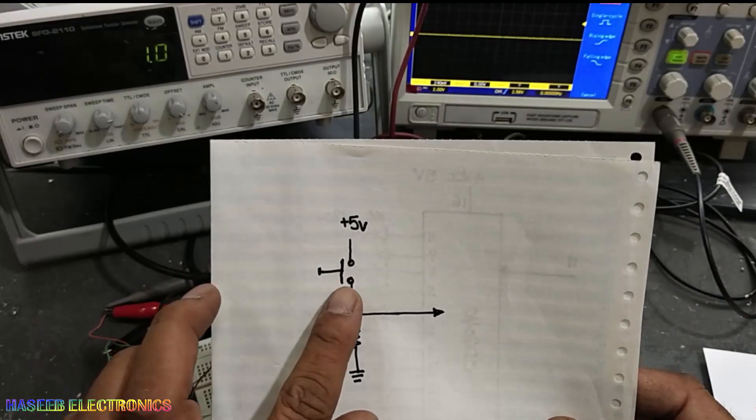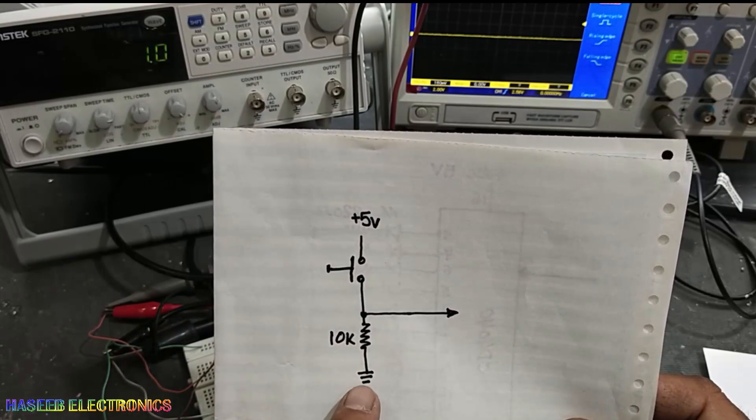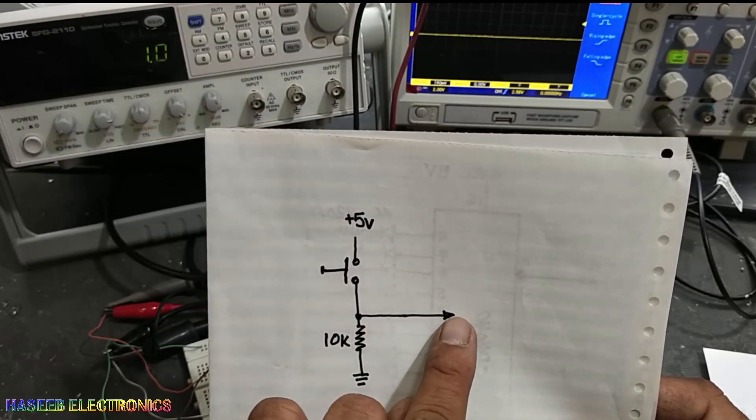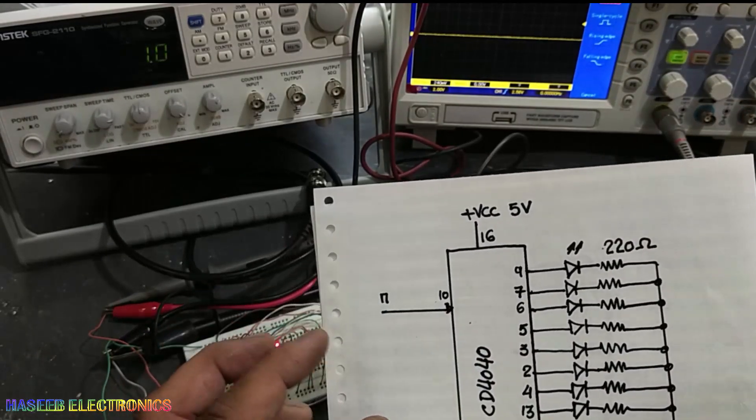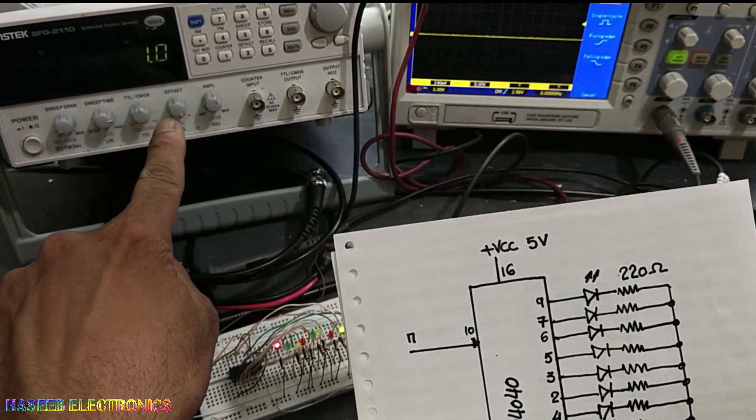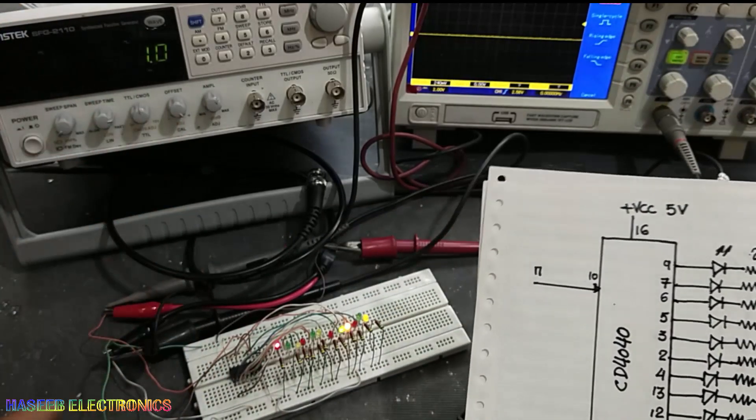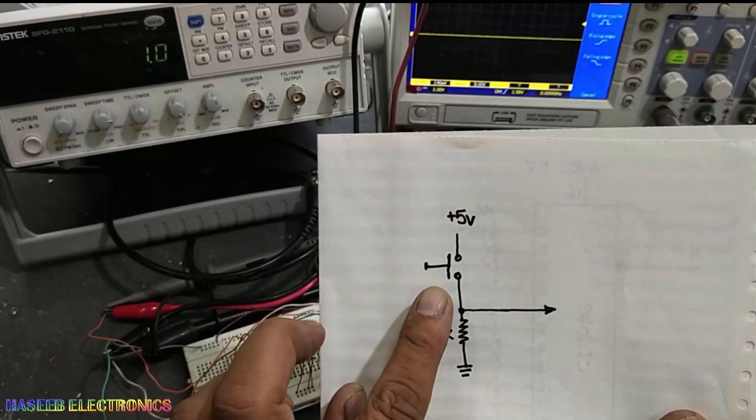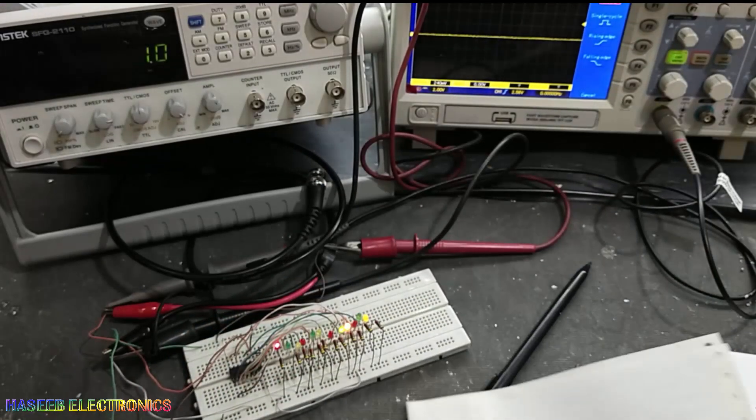By means of a push button, 10 kilo ohm resistance. One end will connect to ground and this is the output which will connect to pin number 10. Here in this case I was connecting external signal, but if you want to test manually, 5 volts will apply to one side of the switch.